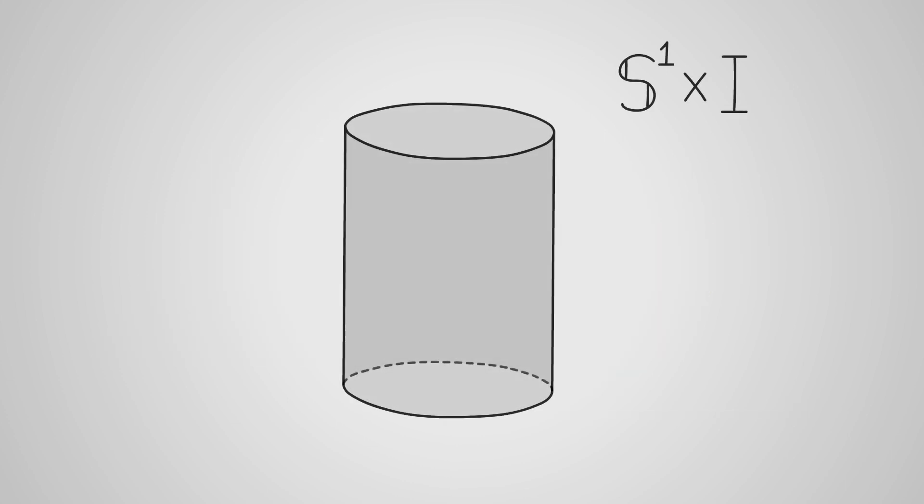Suppose x is a cylinder, something like a short, fat, hollow straw.